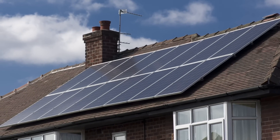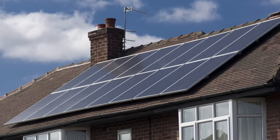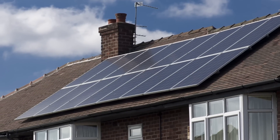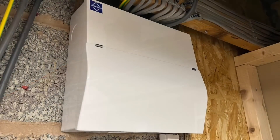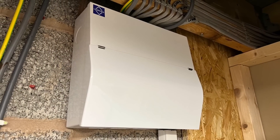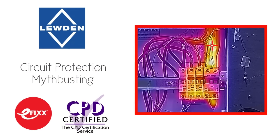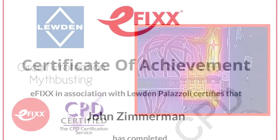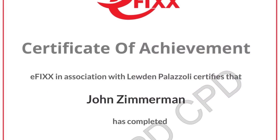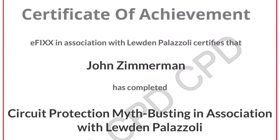In this Q&A video we're going to answer the question: how does a solar PV installation affect the consumer unit of an installation? Just before we explain the answer, please be aware that this video is one of a series we've made on the subject of circuit protection. They can be viewed individually or you can click the link in the description below to view them as part of a free online training package to help you with your CPD, and you'll receive a certificate to prove that you've completed the course.